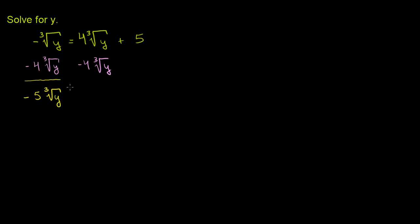That's your left-hand side. On the right-hand side, those two terms cancel out — that was the whole point of subtracting that value. So you're just left with 5. We've almost isolated this cube root of y; we just have to divide both sides of the equation by negative 5.